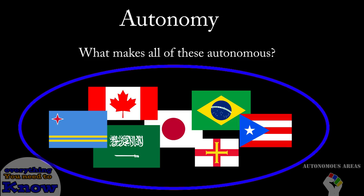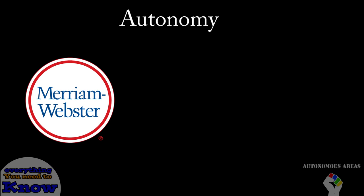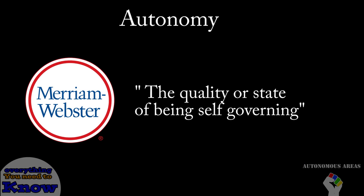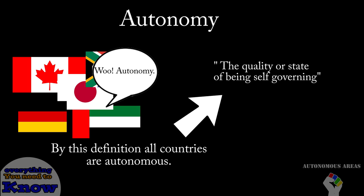So let's start with autonomy. What makes an area autonomous? The definition of the word autonomy, according to the Merriam-Webster dictionary, is the quality or state of being self-governing. So by this definition, every country in the world has total autonomy.